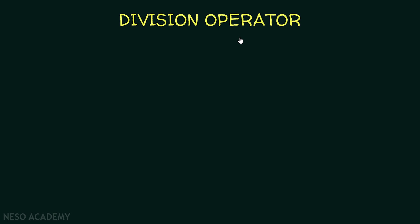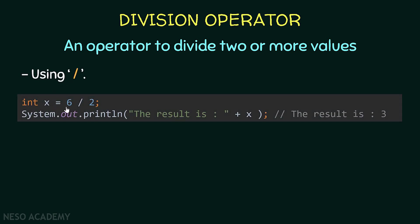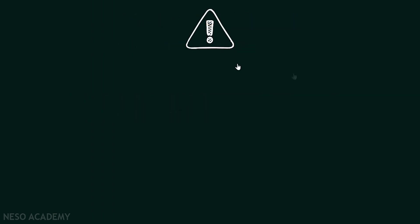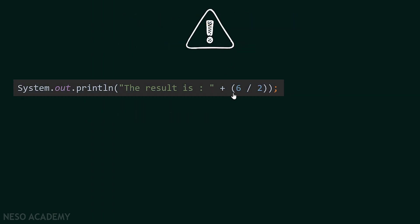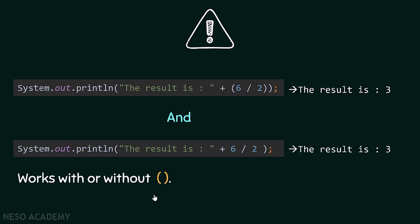Now let's talk about the division operator. It is used to divide two or more values and uses the forward slash. For example, x is equal to 6 divided by 2, and we are printing x, so we will see 'the result is 3'. We can display the result directly using parentheses, which gives 'the result is 3'. We can also use it without parentheses and also get 'the result is 3' — so this works with or without parentheses.